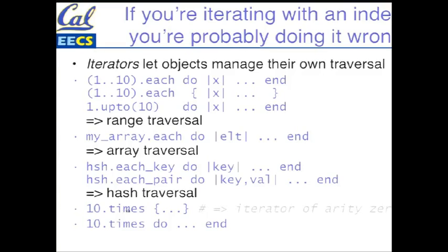What do these things all have in common? They all share the inside-out iteration that Ruby does a little differently from Java. In each case, we're taking an object on the left — like a range, or an array, or a hash — and asking it via the method 'each' to manage traversal of its elements and hand us the elements one at a time. In the case of each_pair, we get a key and its corresponding value one at a time. This is different from the Java idiom where you initialize an iterator, and while the iterator has a next thing, give me the next thing. In a minute we'll see why this is a more general mechanism that you can subvert for your own nefarious purposes.